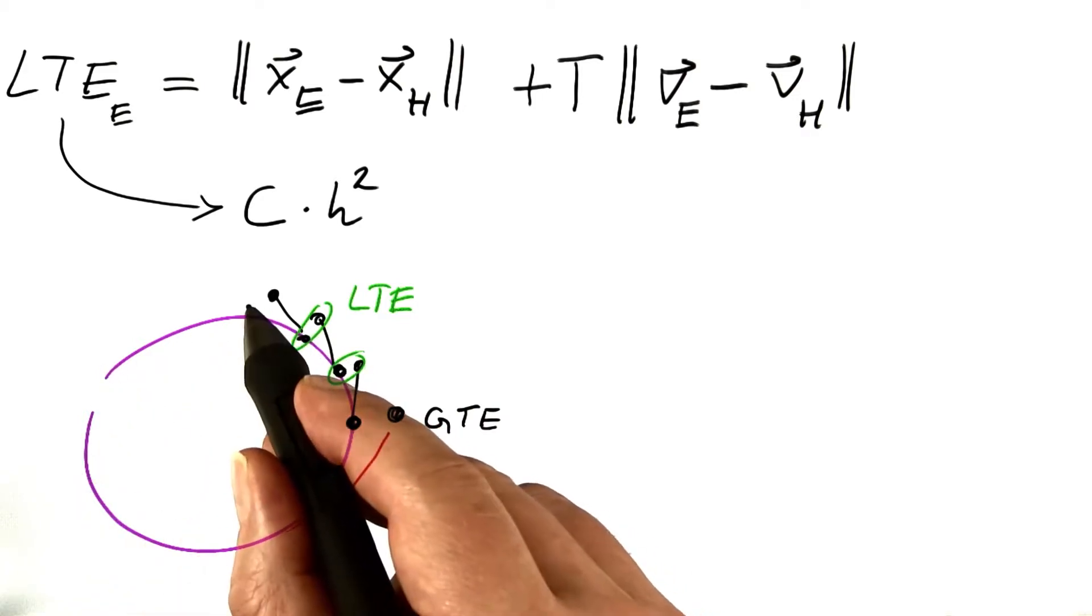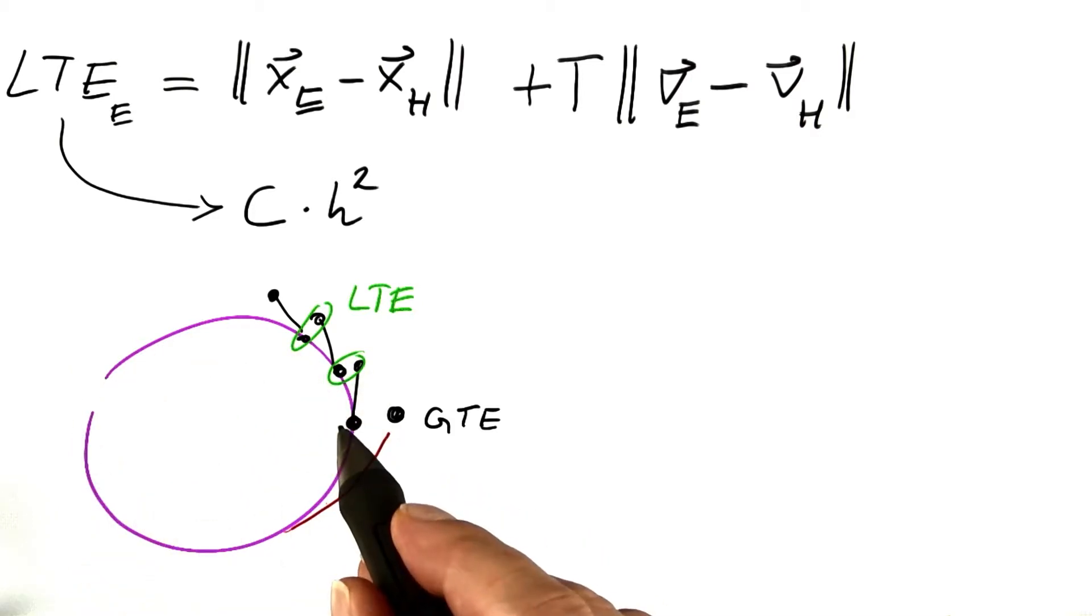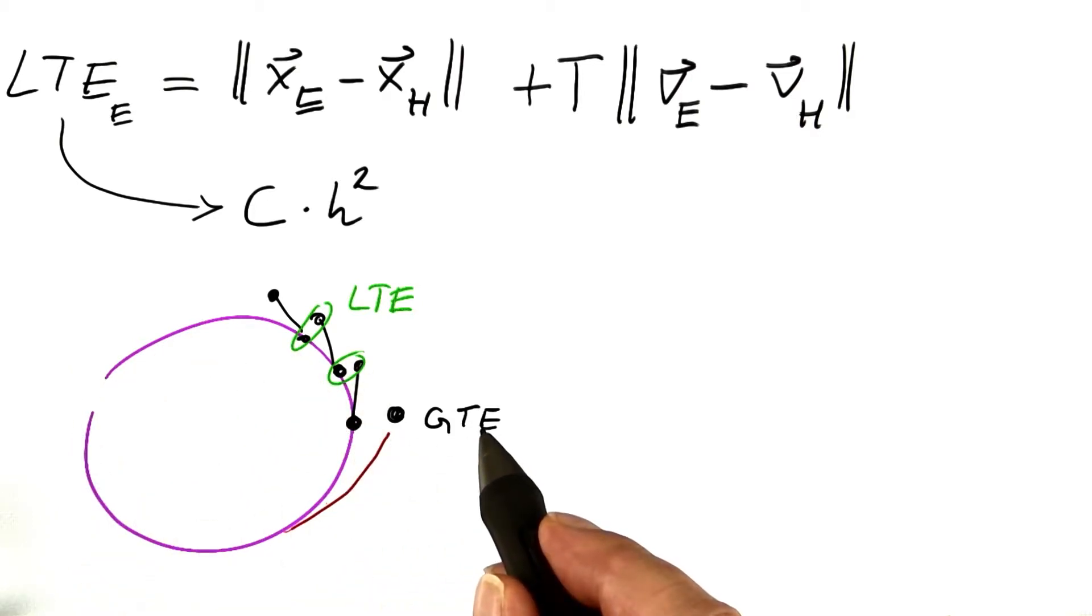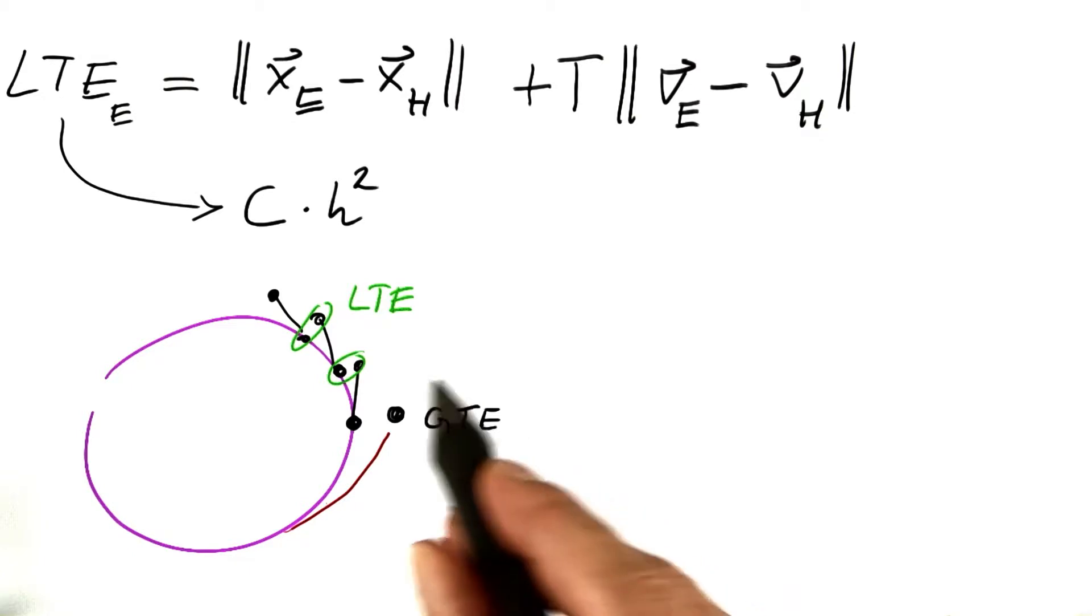Each step has four times the error. I need half as many steps, which means that the total error is multiplied by 2, which we know is the case.